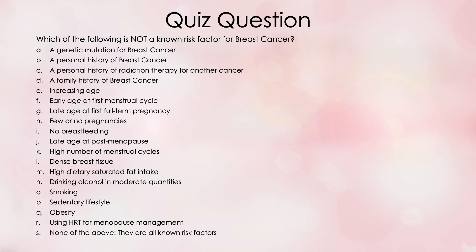J, late age at first menopause. K, high number of menstrual cycles. L, dense breast tissue. M, high dietary saturated fat intake. N, drinking alcohol in moderate quantities. O, smoking. P, sedentary lifestyle. Q, obesity. R, using HRT for menopause management. And S, none of the above — they are all known risk factors.